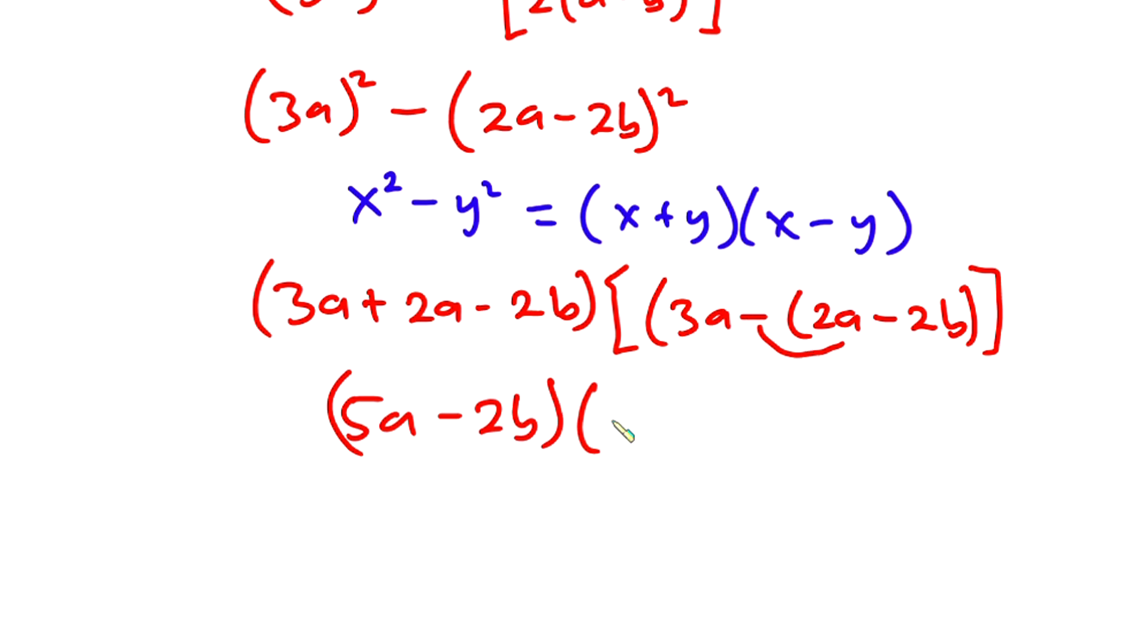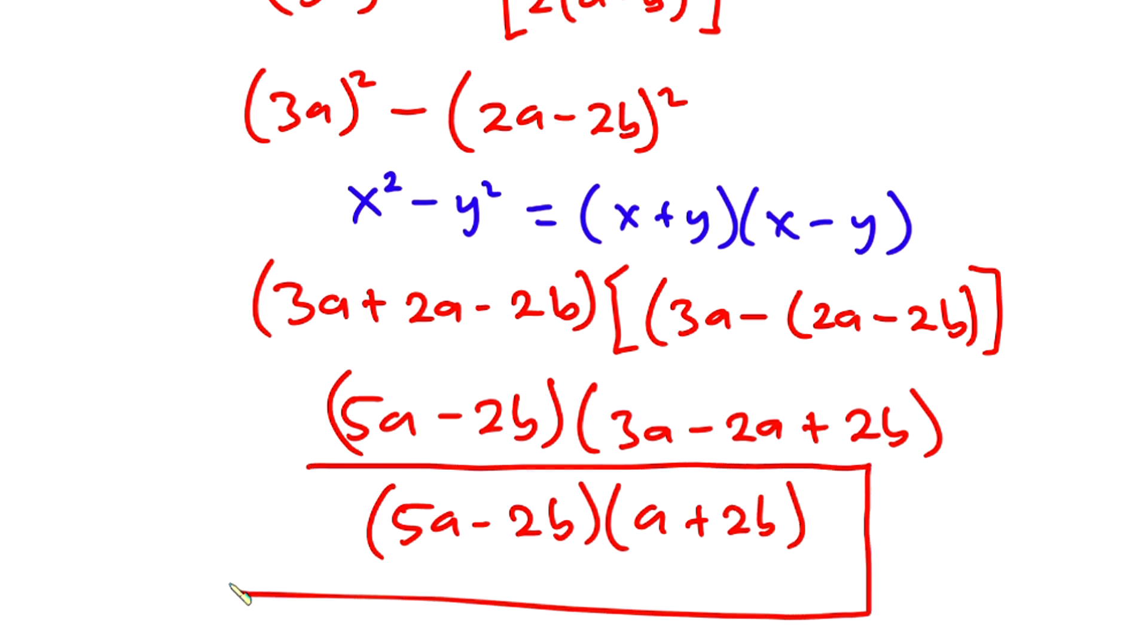So we have (5a - 2b) as one of the factors, and (a + 2b) as the other factor. This is our final answer.